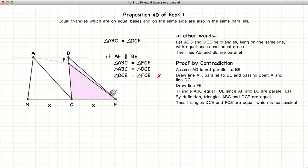DCE equal in area to FCE is obviously not true. And consequently, our assumption that AF is parallel to BE is untrue.